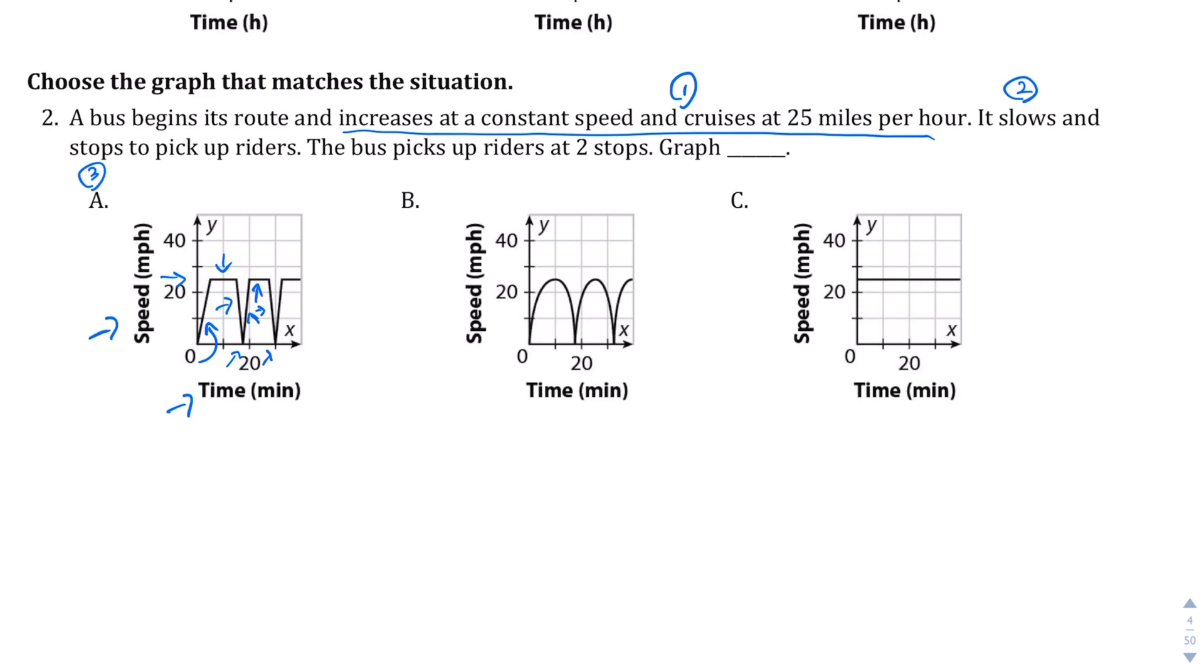And then, yeah, so graph A looks pretty good. Graph B does as well, except the only difference is there's no cruising part. There's a part where he moves up to 25 miles per hour and then after he kind of hits the apex of 25 miles per hour, he starts immediately slowing down. B is not a bad option, but I think A is just a little bit more accurate.